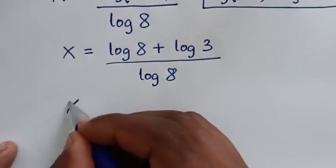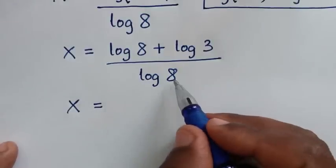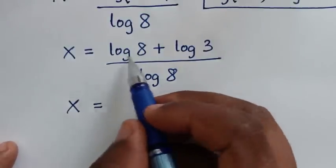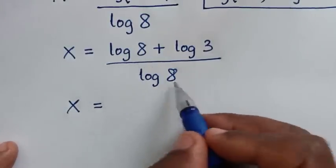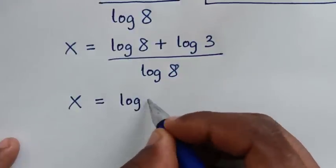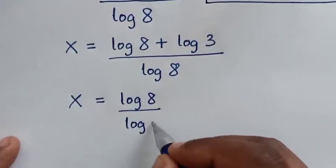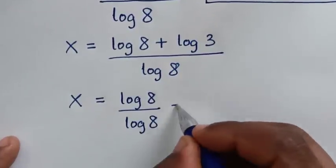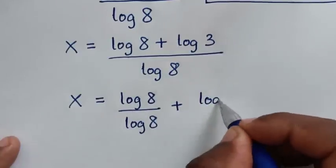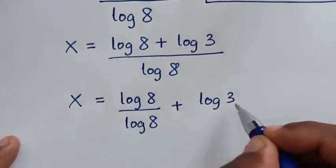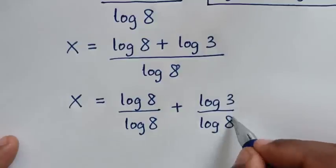Then x is equal to log of 8 plus log of 3, all divided by log of 8. We divide log of 8 into each part: log of 8 over log of 8, plus log of 3 over log of 8.